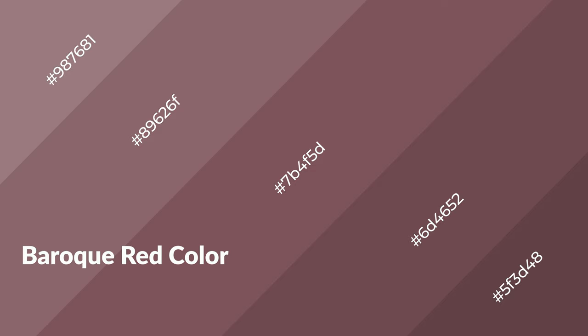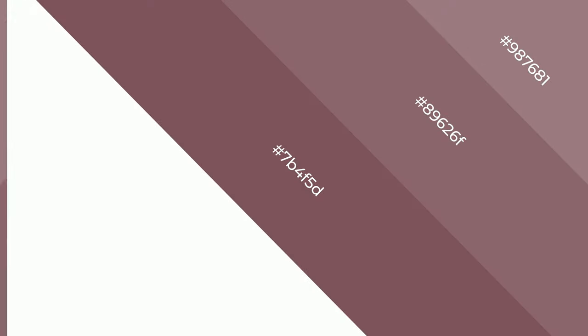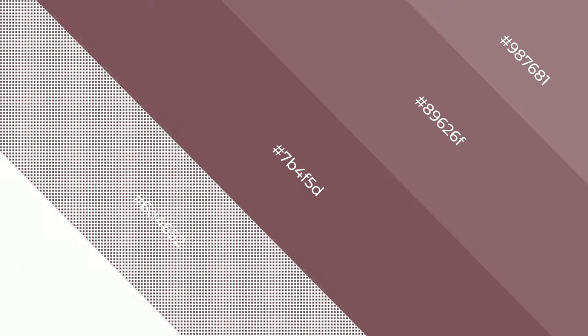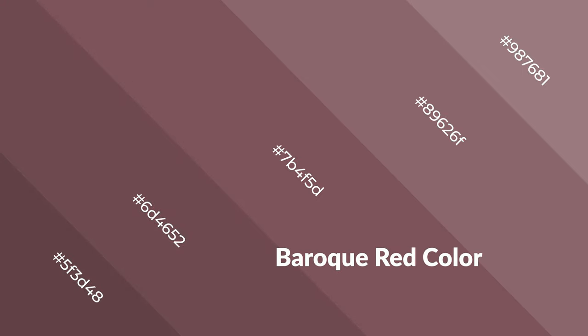Baroque red is a warm color and it emits cozier and active emotions. Warm colors are symbols of warmth, fire, heat, and sunshine. It also evokes joy, passion, love, and even anger. You can see them used in restaurants and gyms.